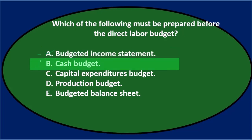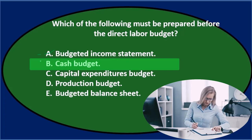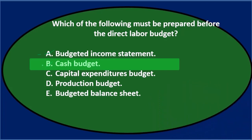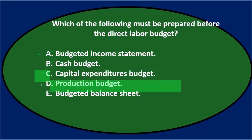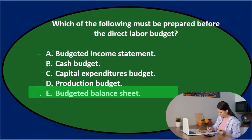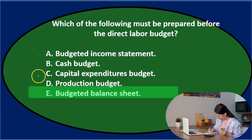Option B, the cash budget, is also close to the bottom — one of the later items — so it's probably not done before the direct labor budget. Option C, the capital expenditures budget, is also getting pretty far down on the list. Option D, the production budget, is higher up — done somewhat early in the process — so that could possibly be it. Option E, the budgeted balance sheet, is like the final product at the end, so we're definitely not doing that before the direct labor budget.